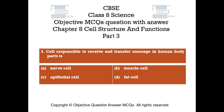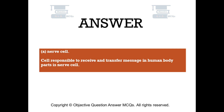Question number 3: Cell responsible to receive and transfer messages in human body parts is — Option A: Nerve cell, Option B: Muscle cell, Option C: Epithelial cell, Option D: Fat cell. The right answer is Option A: Nerve cell. The cell responsible to receive and transfer messages in human body parts is the nerve cell.